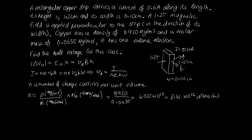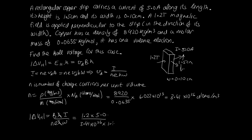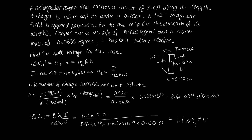Now substituting everything into V_H = BI / (neW): B = 1.2 T, I = 5 A, n = 3.41 × 10²⁶, e = 1.602 × 10⁻¹⁹ C, and W = 0.10 cm = 0.0010 m. Solving this gives a Hall voltage of 1.1 × 10⁻⁴ volts to two significant figures.